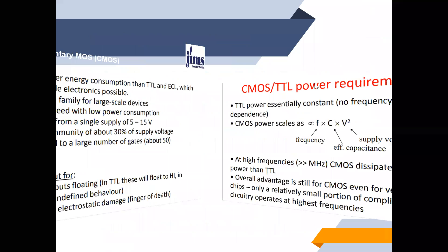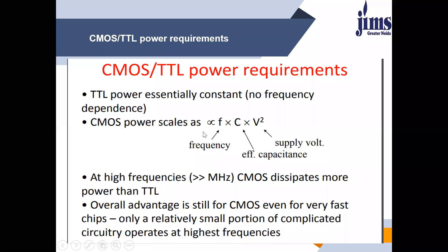Comparing CMOS to TTL in terms of power: CMOS power scales proportionally to F × C × V². At high frequencies, CMOS dissipates more power in comparison to TTL. However, the overall advantage is that only a relatively small portion of a complicated circuit operates at high frequencies, so CMOS is still very beneficial overall.